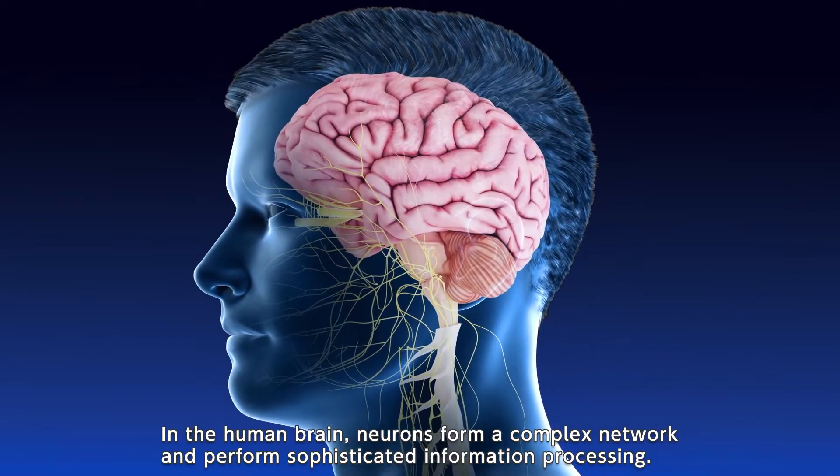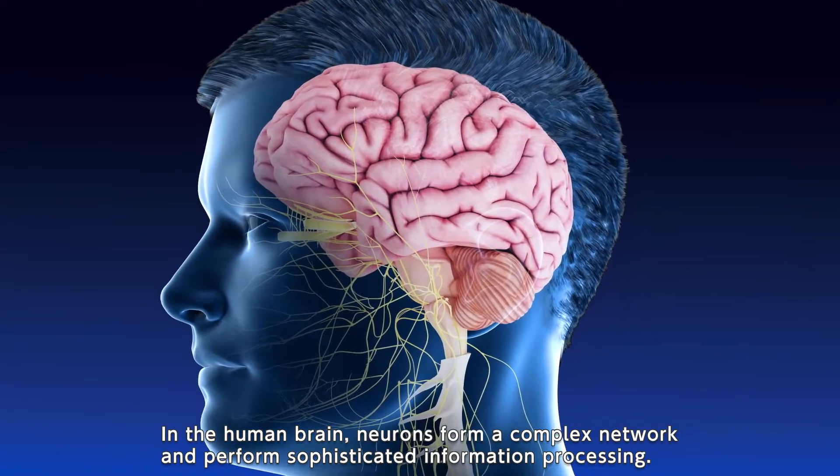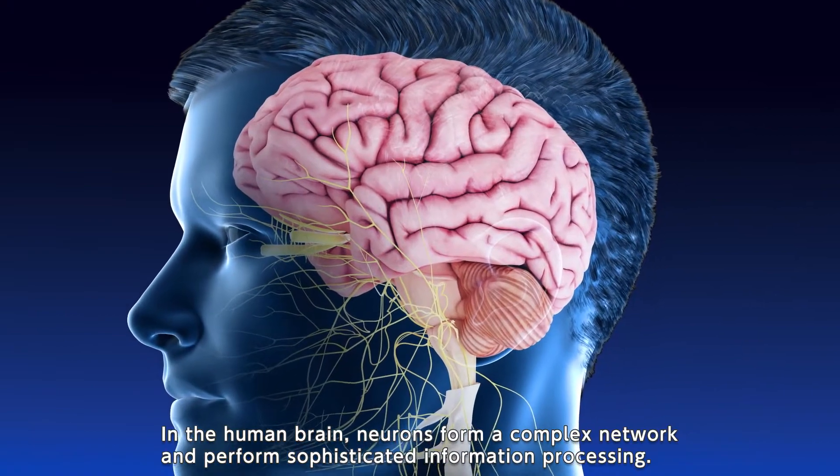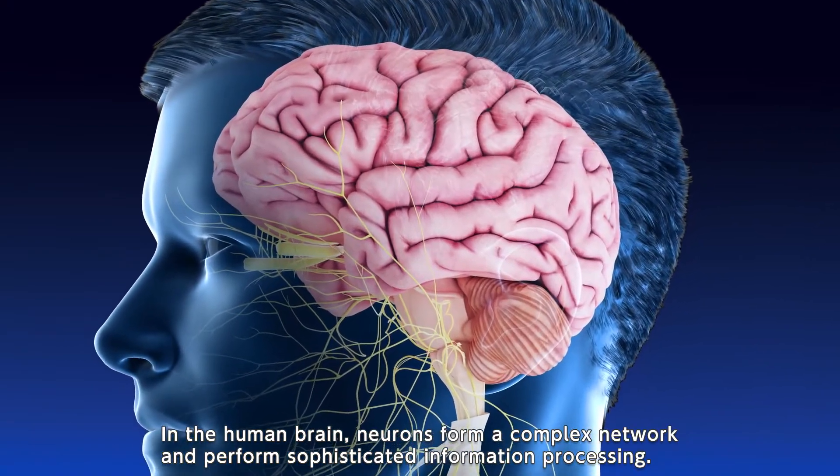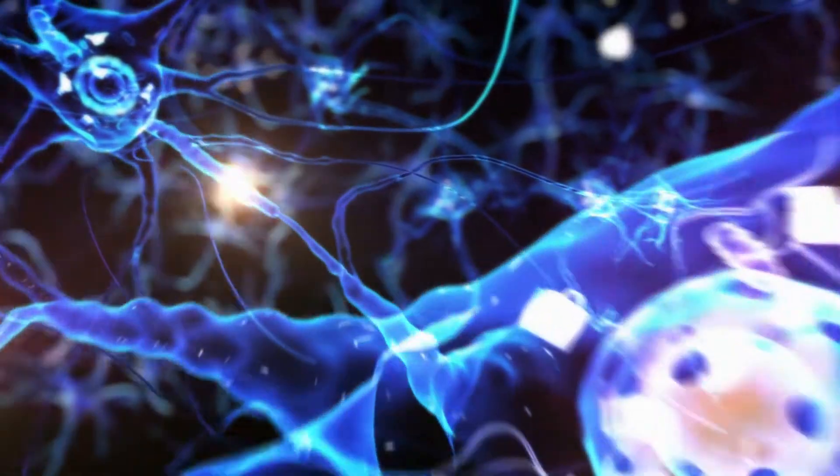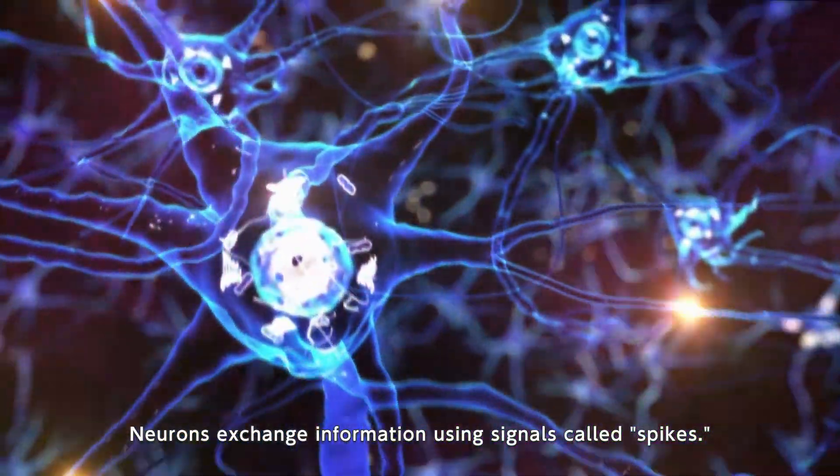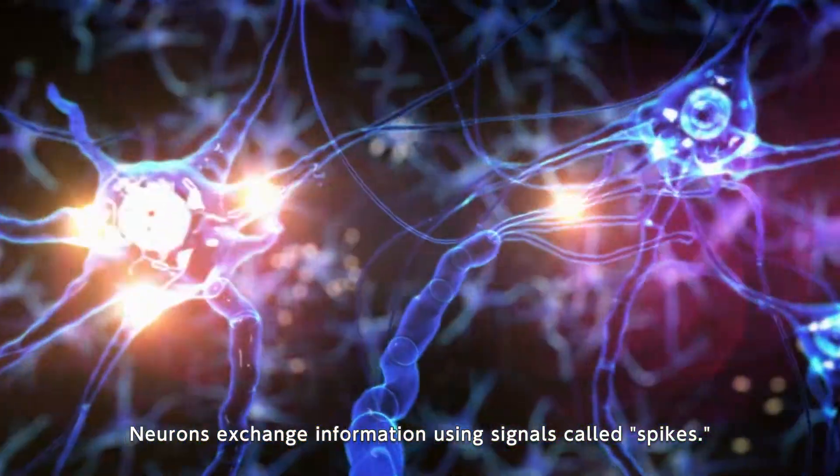In the human brain, neurons form a complex network and perform sophisticated information processing. Neurons exchange information using signals called spikes.